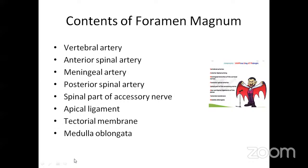The foramen magnum is an opening, so it has contents. A mnemonic from medical school — 'vampire singing at midnight' — helps remember them: vertebral artery, anterior spinal artery, meningeal artery, posterior spinal artery, spinal part of the accessory nerve, apical ligament, tectorial membrane, and medulla oblongata.